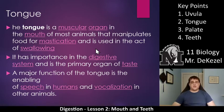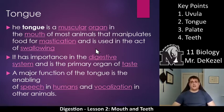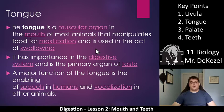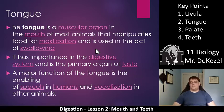It has importance in the digestive system and is the primary organ of taste, which allows us to detect foods that may be bad for you and also foods that you enjoy. Another major function of the tongue is to enable speech in humans and vocalization in other animals. As I talk, I can feel my tongue moving around, and as I think about it, it makes it more difficult to talk. So just let the tongue do its thing when you're speaking. It is very good at what it does, as well as staying out of the way of your teeth when you're chewing. Sometimes it gets caught, but generally it moves around quite quickly.